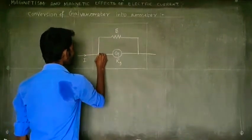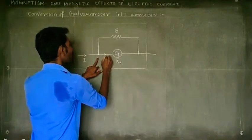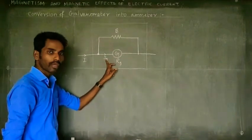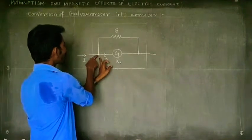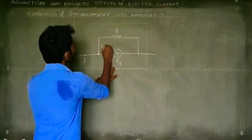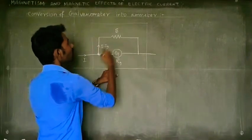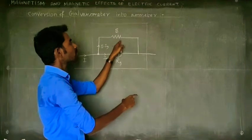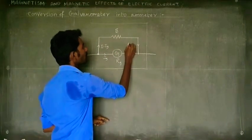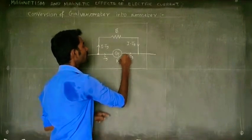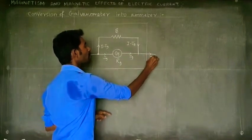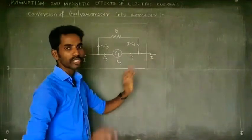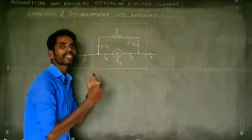Right now, the total current is I at the junction. The Ig current flows through the galvanometer, and the remaining current, I minus Ig, flows through the shunt resistance. So the total current I equals Ig through the galvanometer plus I minus Ig through the shunt resistance.